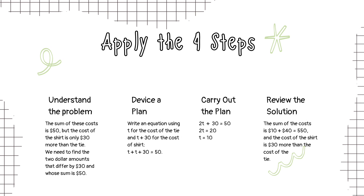T plus T plus 30 equals 50. The third step is we need to carry out the plan. So, T plus T plus 30 equals 50, which becomes 2T plus 30 equals 50. Then, moving the 30 across gives us 2T equals 20, which means T equals 10. So let's review the solution. The sum of the costs is $10 plus $40 equals $50, and the cost of the shirt is $30 more than the cost of the tie.